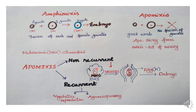In this apomixis, we have ovule development — megasporangium. Megasporangium is a type of embryo sac. Megasporogenesis is the process. It is the development in the ovule, where the megaspore mother cell is diploid — it has a double set of chromosomes.